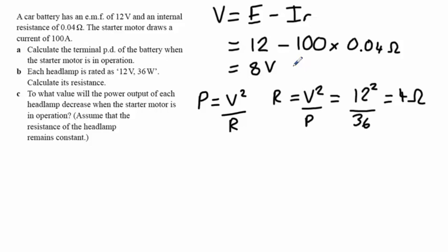Now, look at the effect of the internal resistance on this circuit again. The battery should give out 12 volts, that's the EMF. However, because the starter motor is drawing such a huge current, 100 amps there, the terminal voltage, terminal PD, has dropped to 8 volts, which means that those lamps will only be supplied with 8 volts.